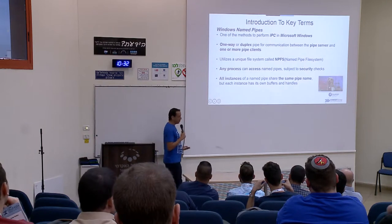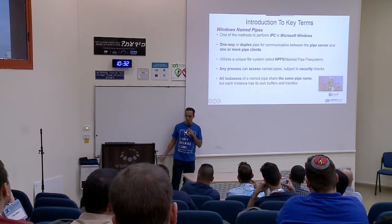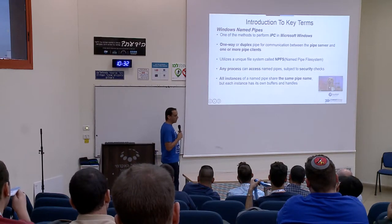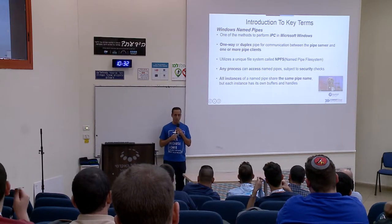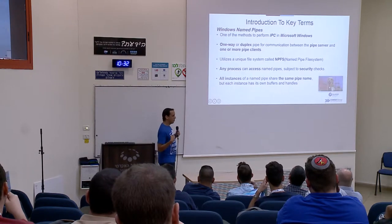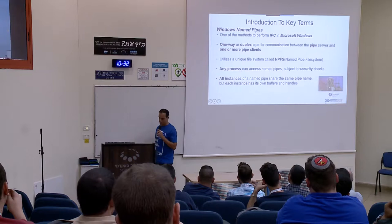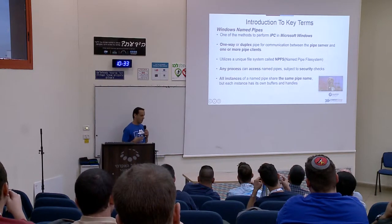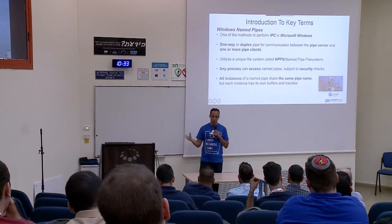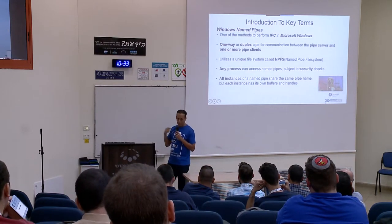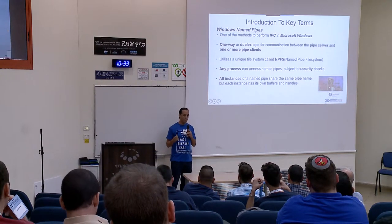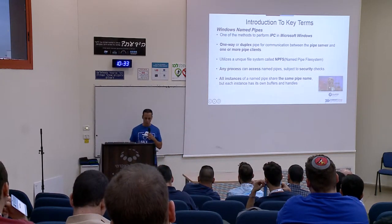Windows named pipes is a communication interface. It can be either half-duplex or full-duplex — mostly full-duplex. It utilizes a unique file system called, unsurprisingly, NPFS — Named Pipe File System. Any process can access named pipes as long as you have the proper permissions. I'll discuss named pipe ACLs later on. All instances share the same pipe name — if you have a pipe called GIL, everyone that wants to connect to it will access GIL and will have a pipe instance called GIL. It's basically similar to sockets and TCP/IP communication, but based on a unique file system instead.